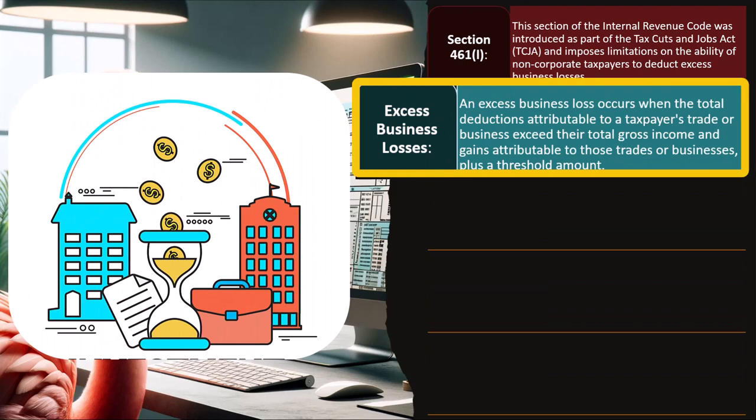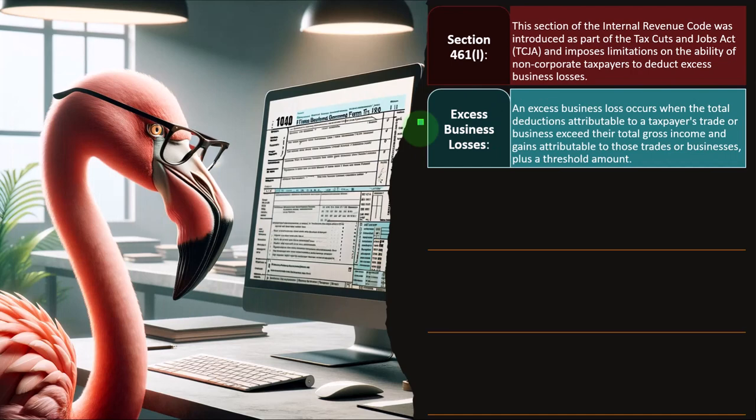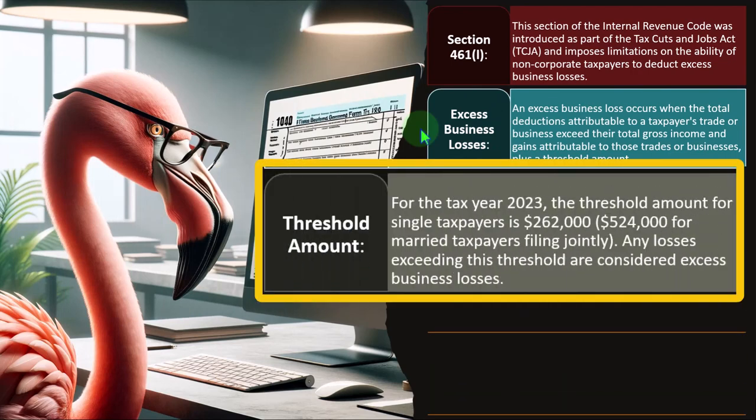The IRS is going to have more skepticism about people taking losses. The IRS thinks of itself as the silent partner of the taxpayer — it wants part of what you earn, but if you lose money, it doesn't want to be responsible for that. An excess business loss occurs when the total deductions attributable to a taxpayer's trade or business exceed their total gross income and gains attributable to those trades or businesses plus a threshold amount.